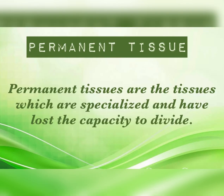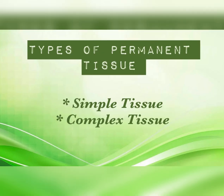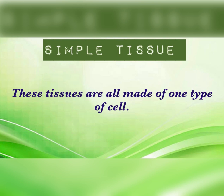Permanent tissue cells are specialized and have lost the capacity to divide. They are actually made up of meristematic tissue but no longer divide. There are two types of permanent tissue: simple and complex. Simple tissue is made up of one kind of cell only.